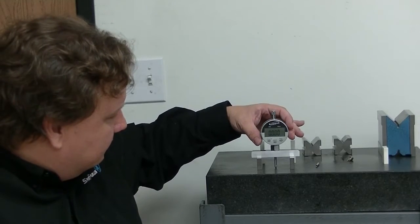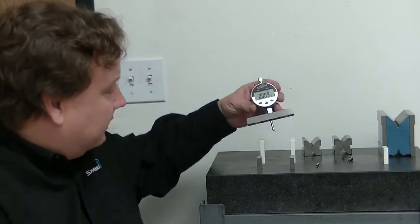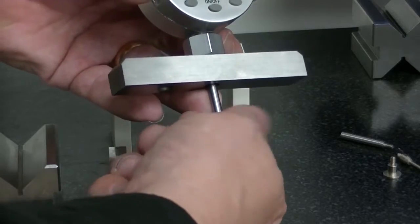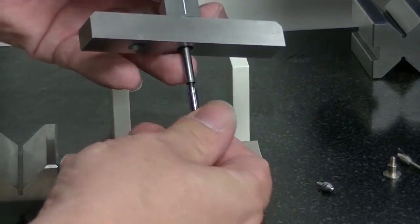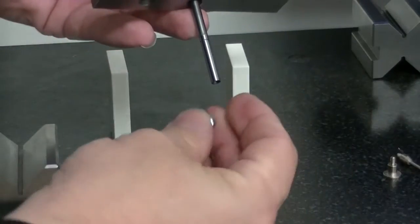And if I want to measure something deeper, like say I have these two-inch blocks here, I can actually remove the nose tip, put the one-inch extension, and this has extensions all the way up to 16 inches. Put that on, put the nose piece back on.